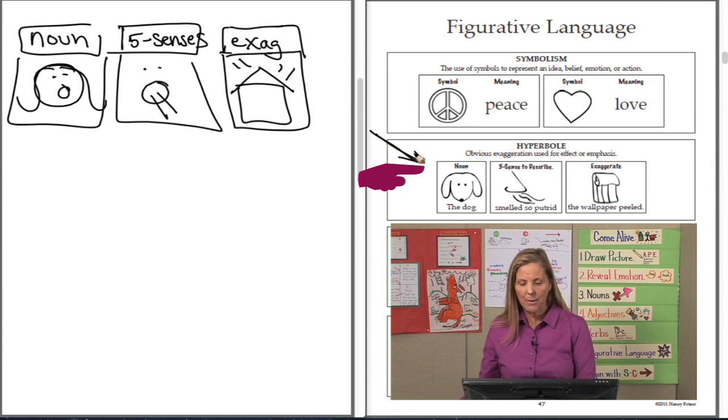In my example on the page, notice who or what was I going to exaggerate. The dog. What five sense? His smell. And then I'm going to exaggerate by saying, he made the wallpaper peel. So, I have the dog smelled so putrid, the wallpaper peeled.